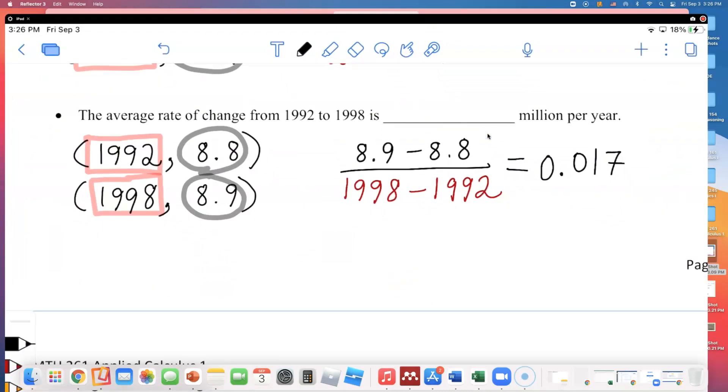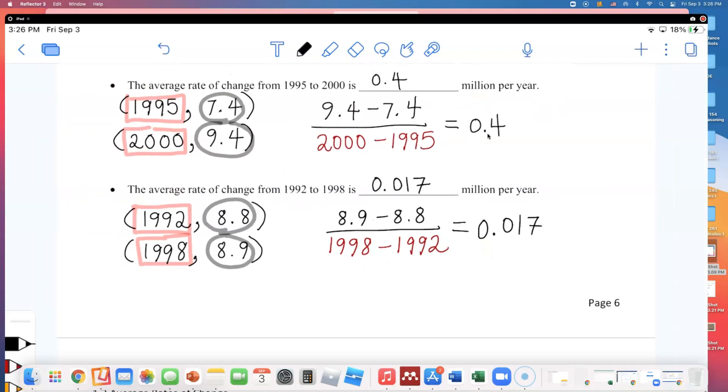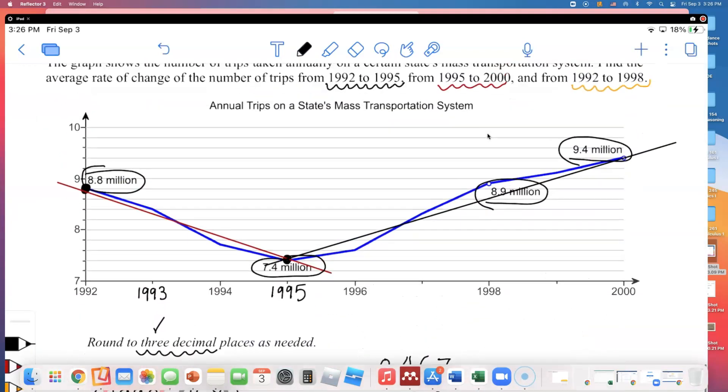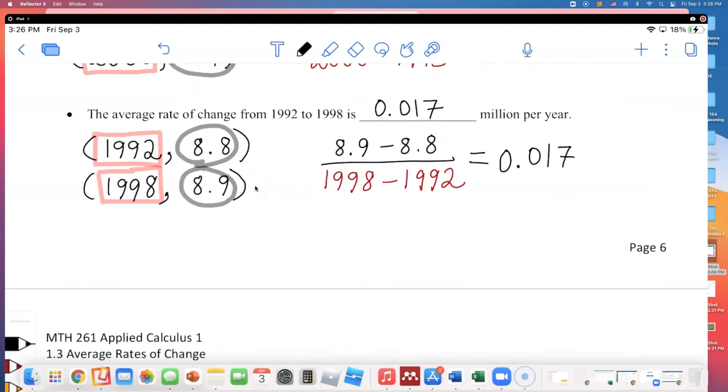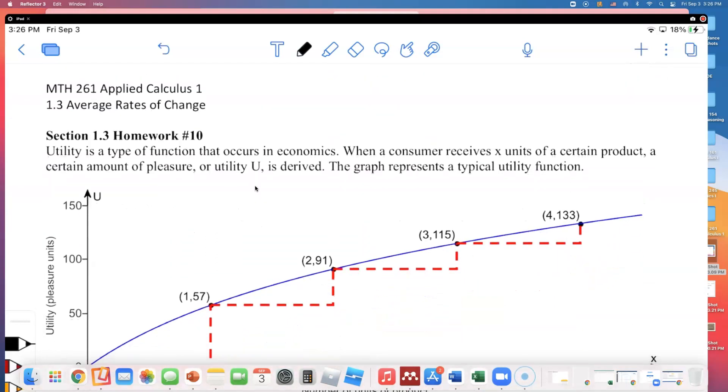It gets so tricky with rounding, because you know how Pearson is. If you mess up on the rounding, they're going to say you missed it. So that is it for this example. I don't think this was too bad. It was a good review of slope formula. So you'll see this one on your section 1.3 homework number 9. I'll come back and go over number 10 in another video.